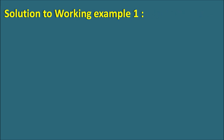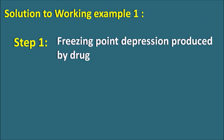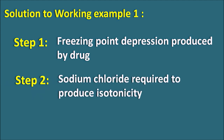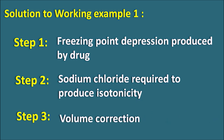For convenience we can divide the solution into 3 steps. Step 1 involves calculating the freezing point depression produced by the drug itself. Step 2 is calculating the sodium chloride required to produce isotonicity for 100 ml of the solution. Step 3 is the volume correction, because the volume of the sample may not be 100 ml, so we have to correct the volume to get the real amount of sodium chloride required.